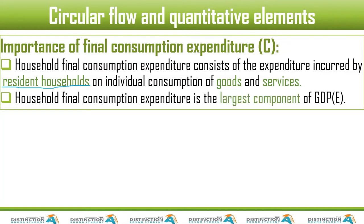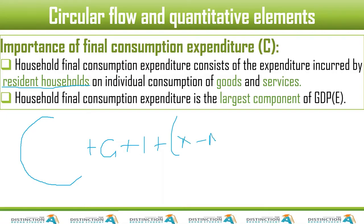Household final consumption expenditure is the largest component of GDP. C is huge. It contributes more than 50% to the entire GDP using the expenditure method. As a matter of fact, it is going to contribute more than 50%. Sometimes it's 60% — 59% is the average from the years I tracked.